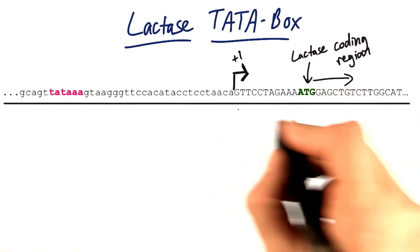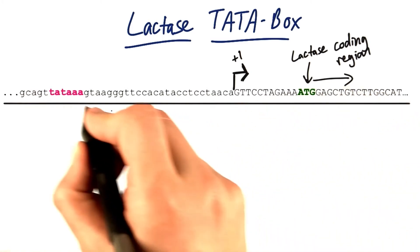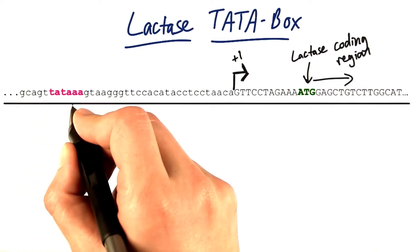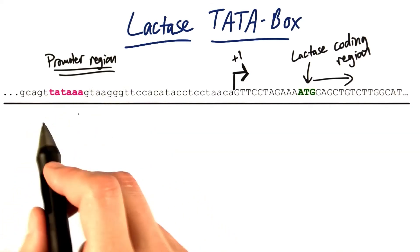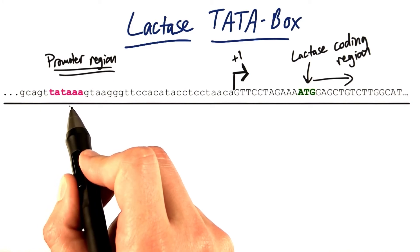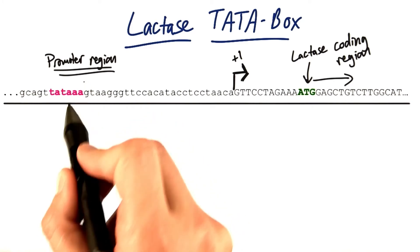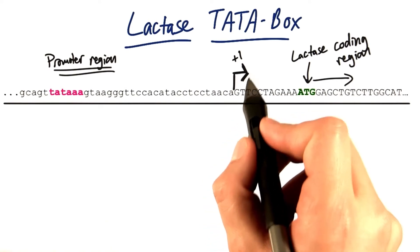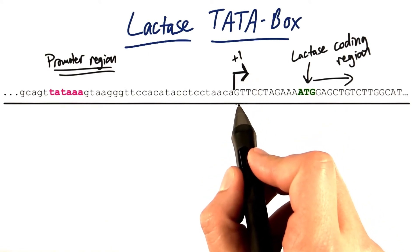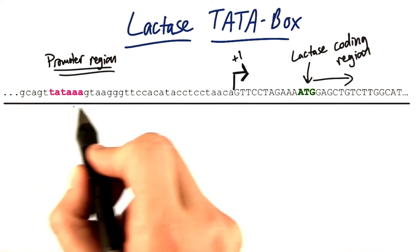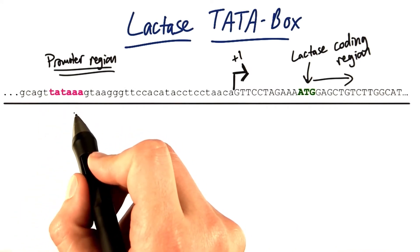But how does this transcript even start? We need this TATA sequence in front. This consensus TATA sequence is a core piece of the promoter region of the lactase gene. Without this TATA region, the correct proteins can't bind and facilitate the initiation of transcription, which begins right here. Everything that happens for transcription depends on sequences like this TATA sequence in the promoter region.